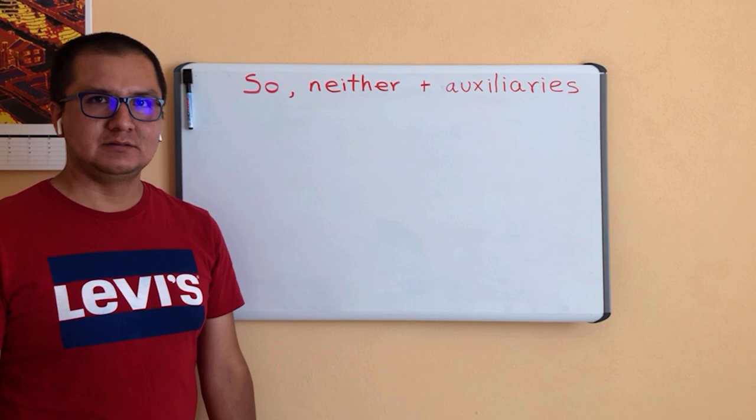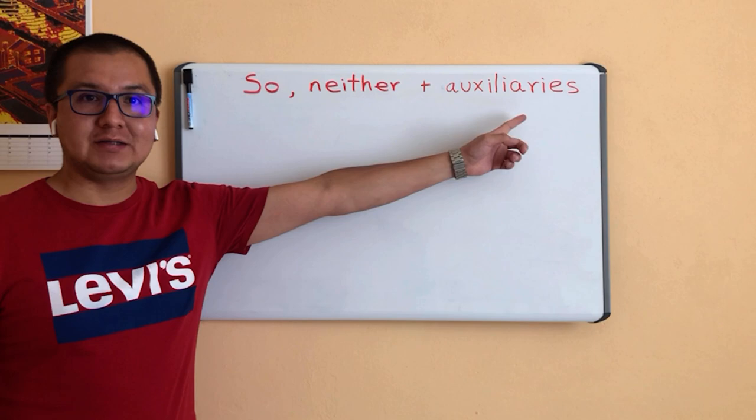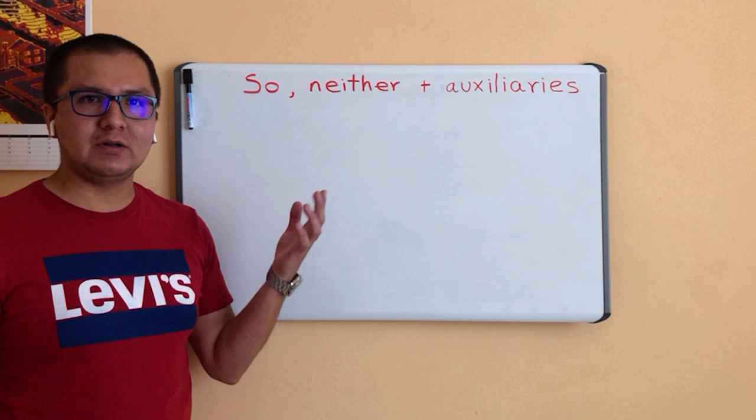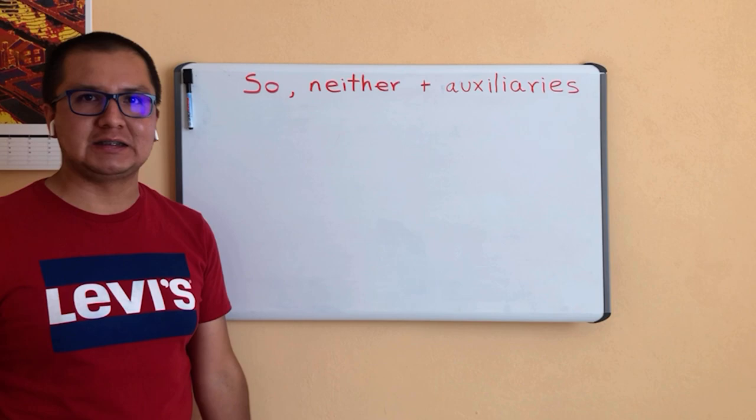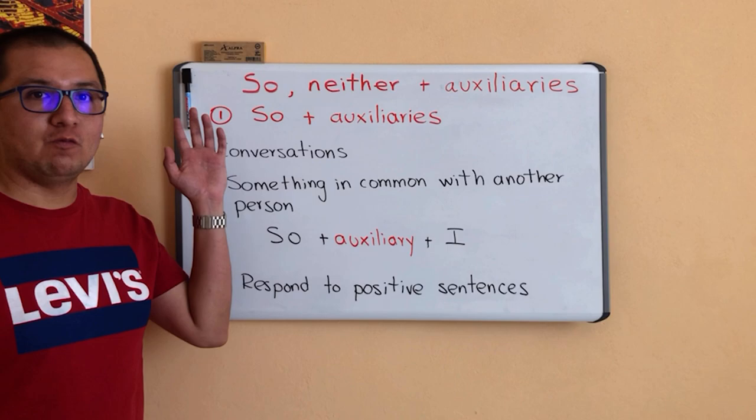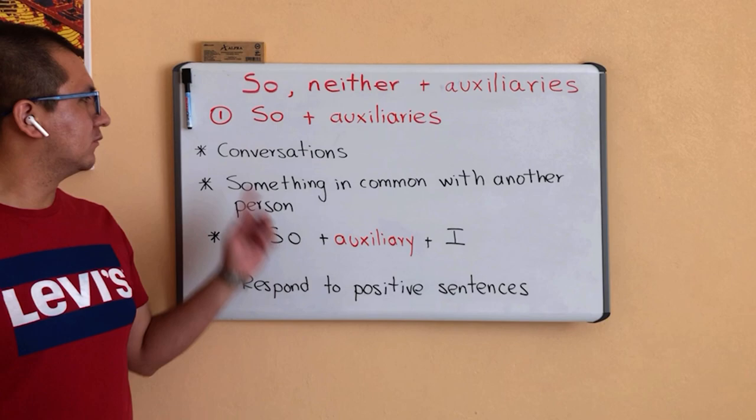Hello everyone and welcome to this lesson. Today's class is SO and NEITHER plus Auxiliaries. Please remember that this lesson will be spoken in English only. In case you have any questions, you can ask them after the presentation. So let's start the lesson with the word SO plus Auxiliaries.